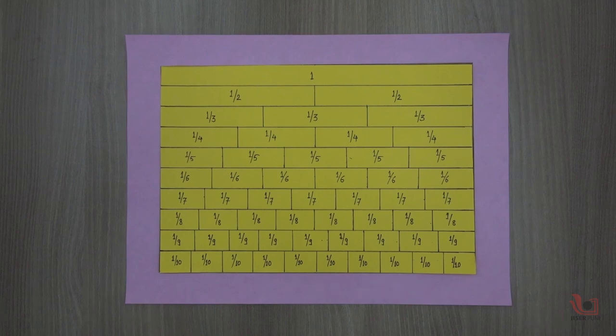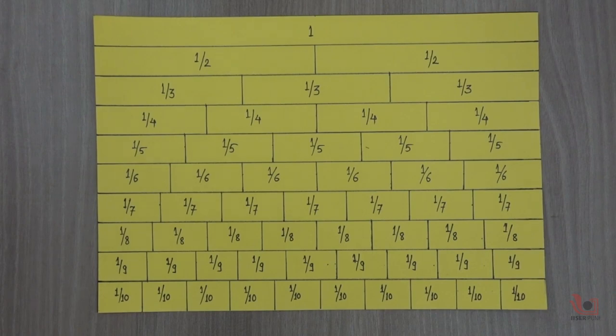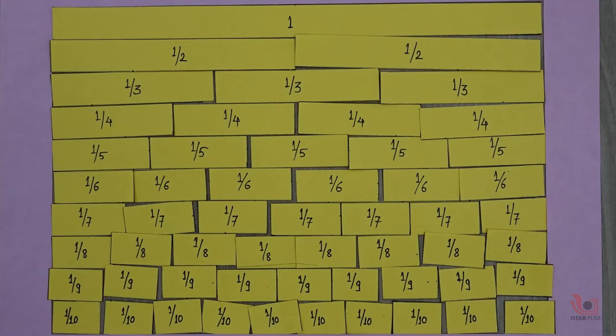Take an A4 size thick paper and mark horizontal lines on it. Divide this paper into 10 equal parts. Here, you can see the first part with mark 1 on it.